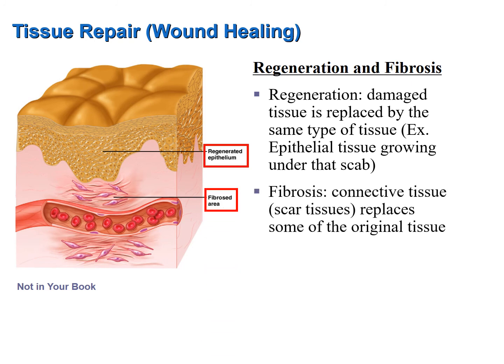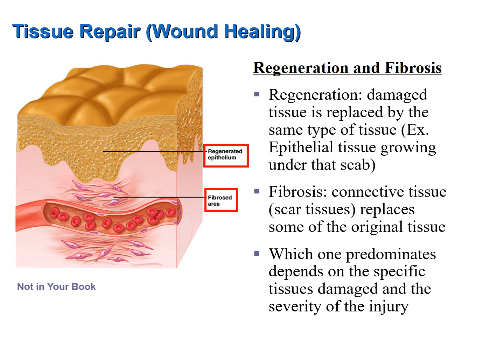With deep wounds, the original tissue is often replaced with connective tissue, known as scar tissue. Scar tissue is strong, but typically lacks the flexibility of the original tissue and is often unable to perform the normal functions of the tissue it replaces. For example, scar tissue forming in the wall of the bladder, heart, or another muscular organ may severely hamper the functioning of that organ. Most injuries involve both regeneration and fibrosis; which predominates depends on the specific tissue damaged and the severity of the injury.